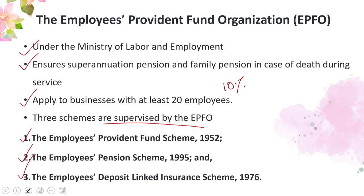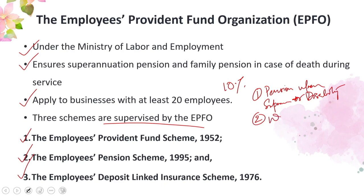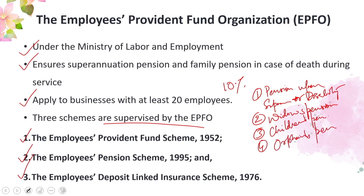Specifically, the EPF scheme is contributed to by the employer at 1.67 to 3.67 percent, and by the employee at 10 to 12 percent. The Employees' Pension Scheme (EPS) is contributed to by the employer at 8.33 percent and the government at 1.16 percent, but not by the employee. The Employees' Deposit Linked Insurance (EDLI) scheme is contributed to by the employer only at 0.5 percent. EPFO offers four main types of monthly pensions: pension upon superannuation or disability, widow's pension for death while in service, children's pension, and orphan's pension.